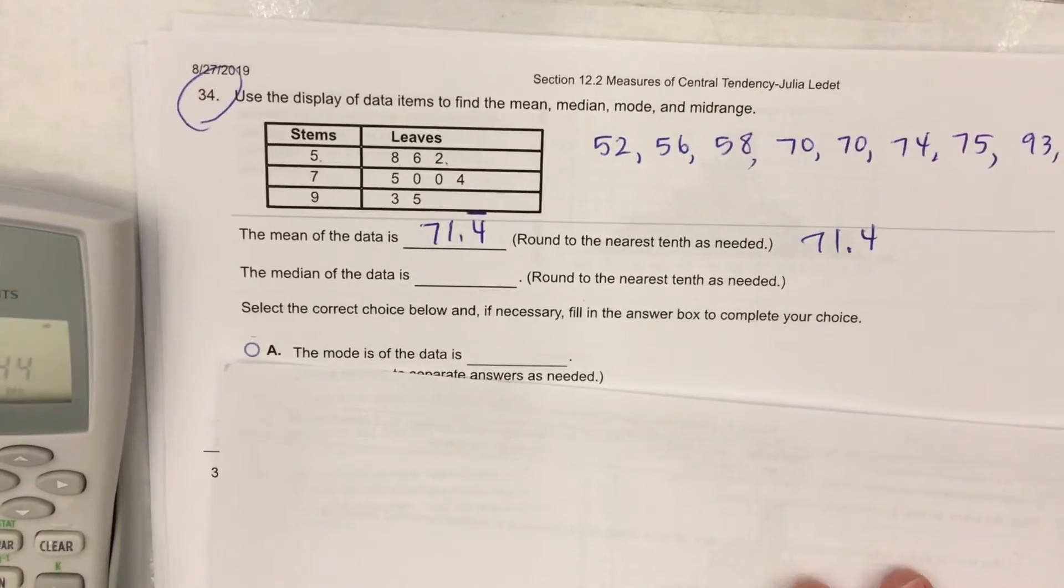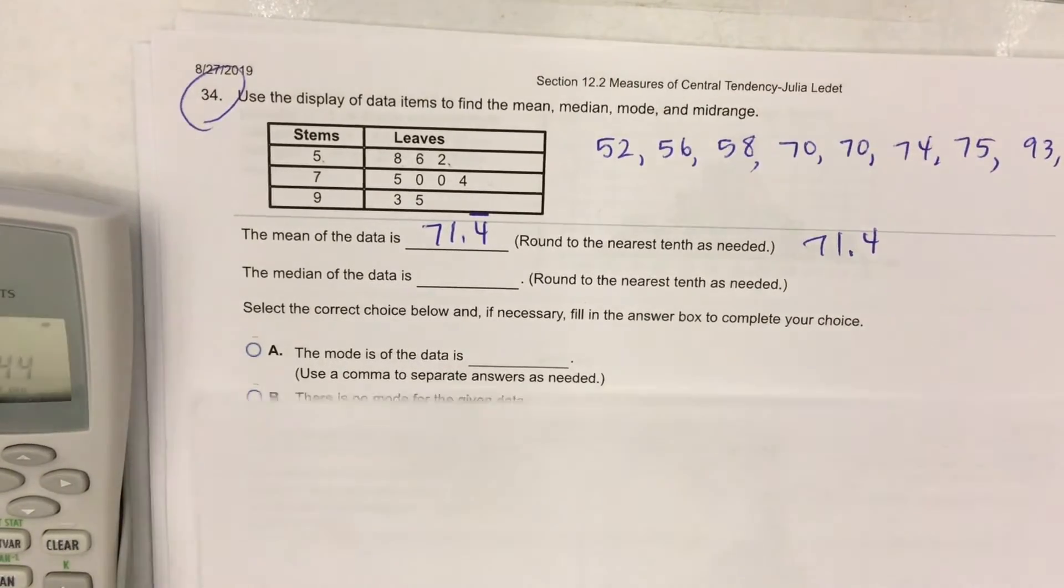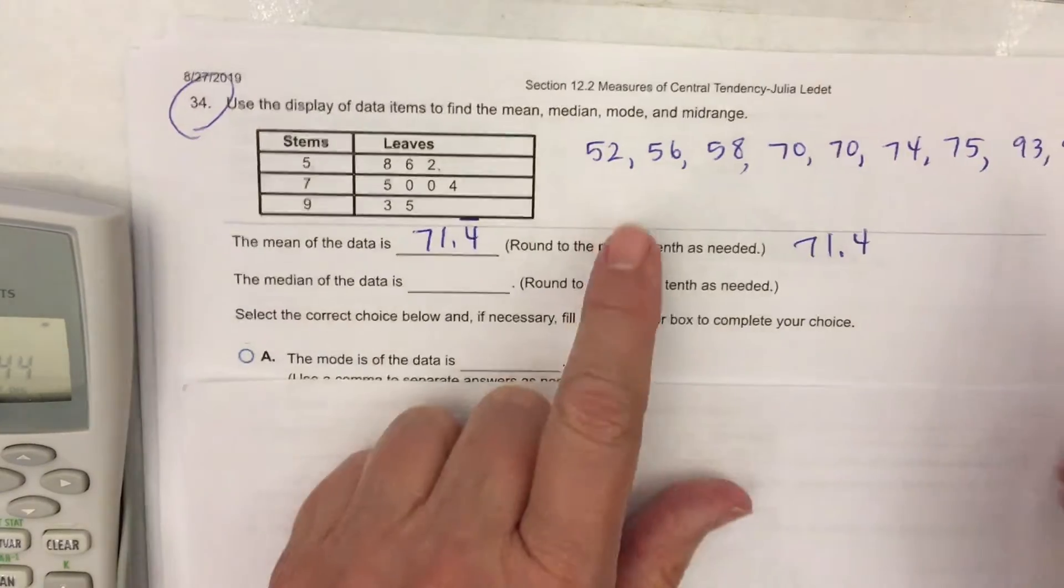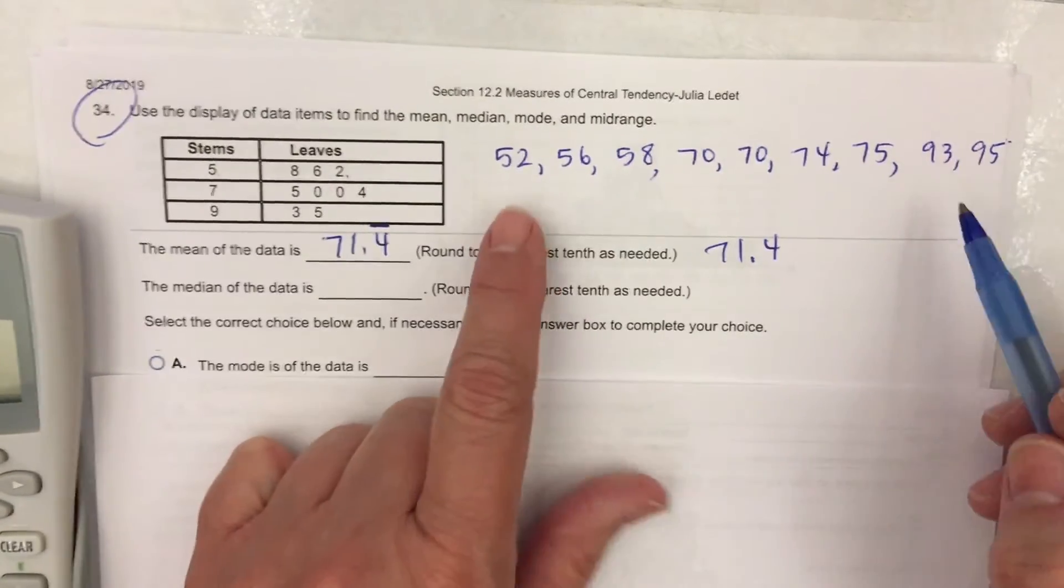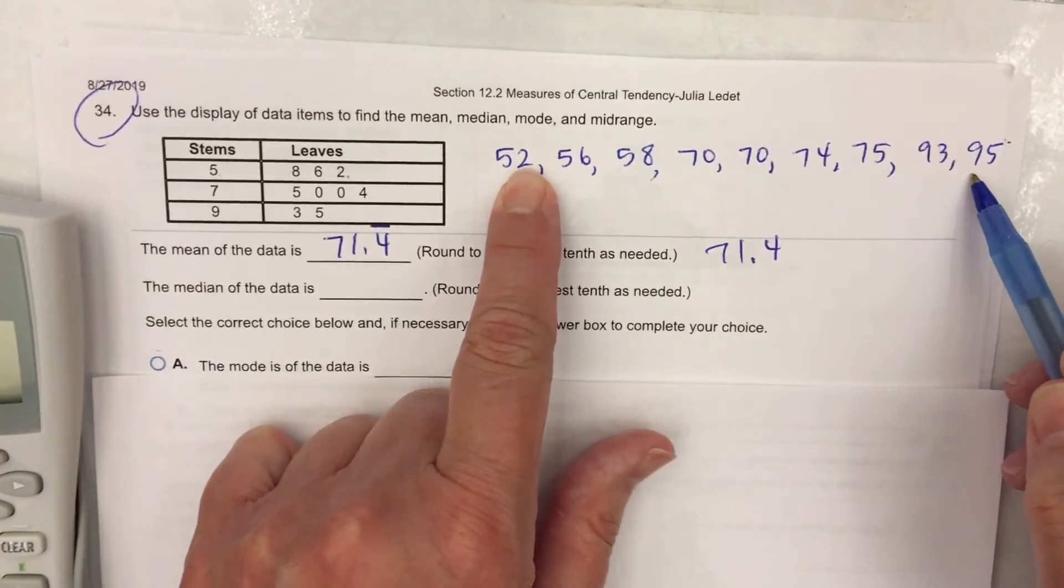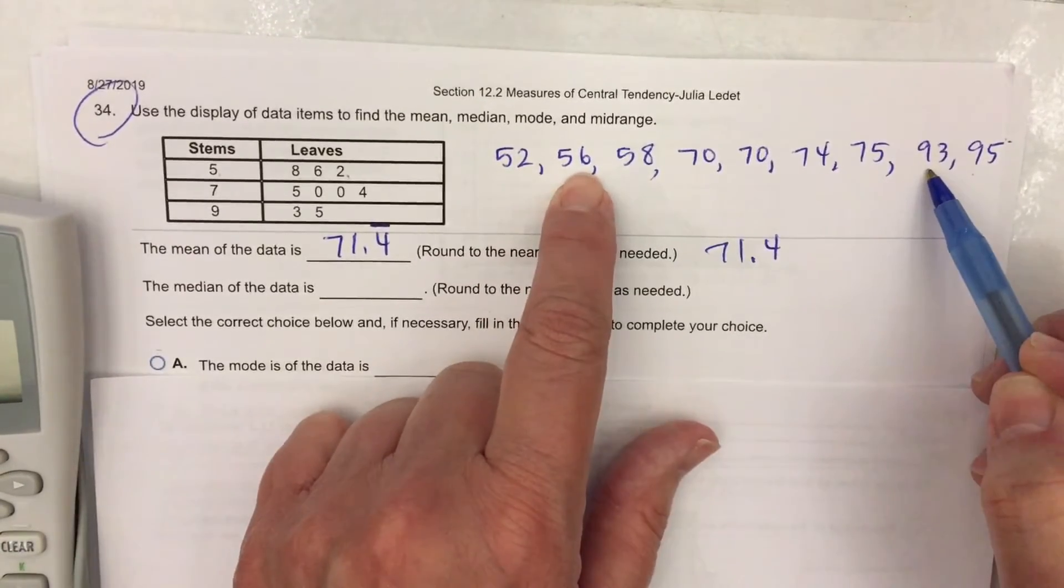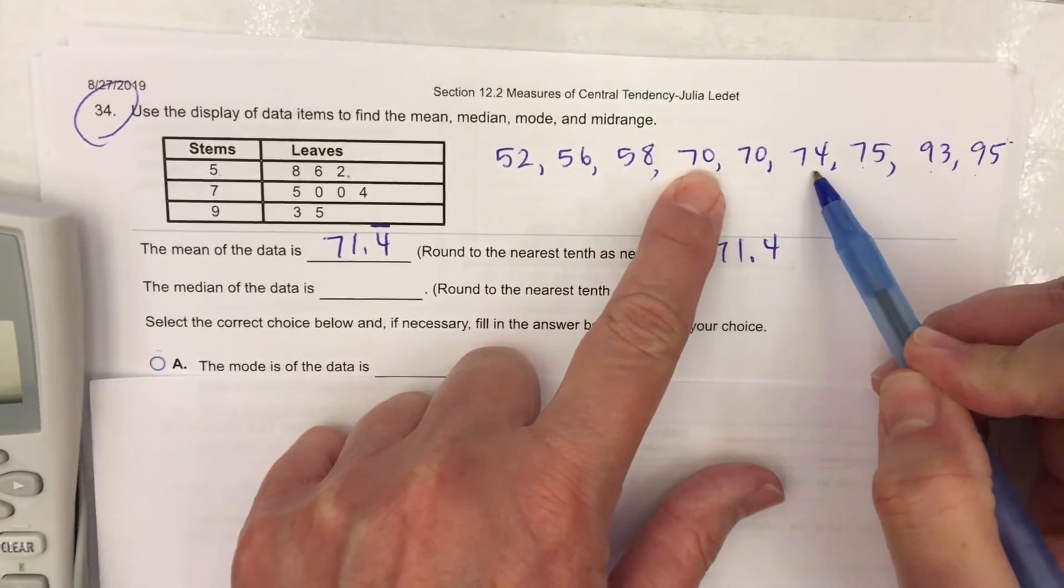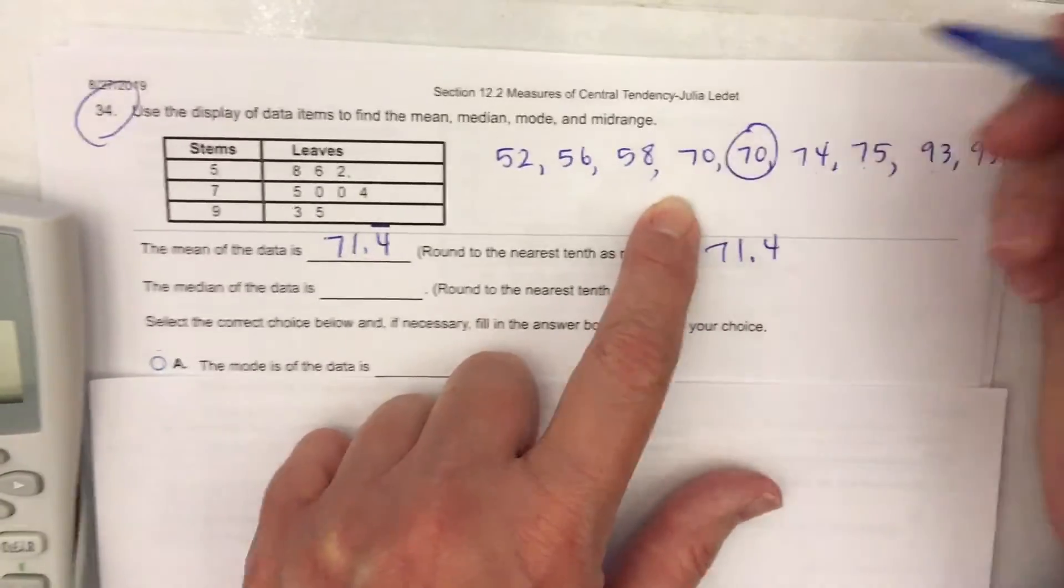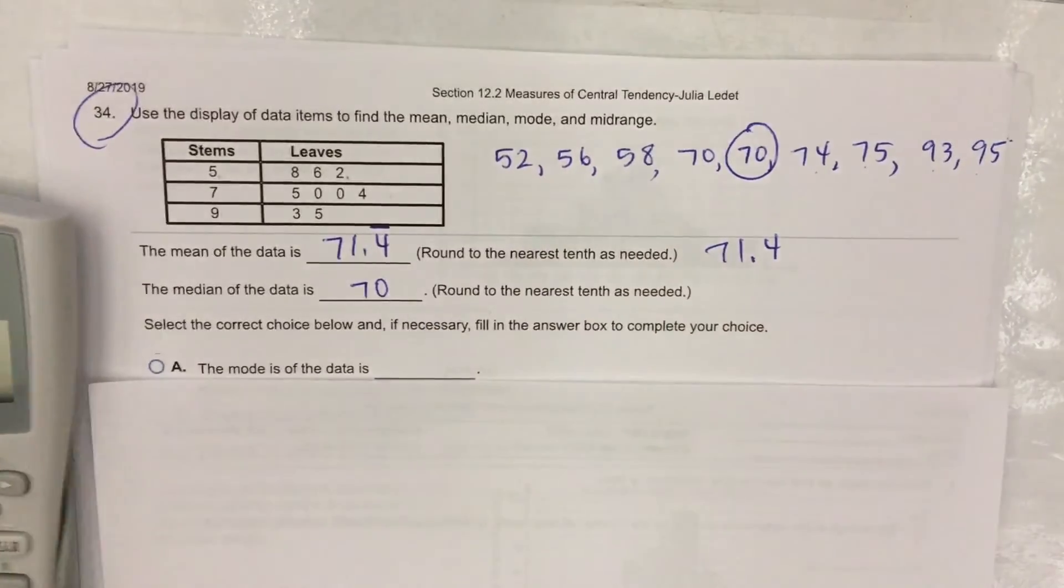The next question is find the median. I'll go from each end like I did before. The median is the one in the middle. Fifty two and ninety five. Fifty six and ninety three. Fifty eight and seventy five. Seventy and seventy four. And seventy. The second seventy is in the middle.